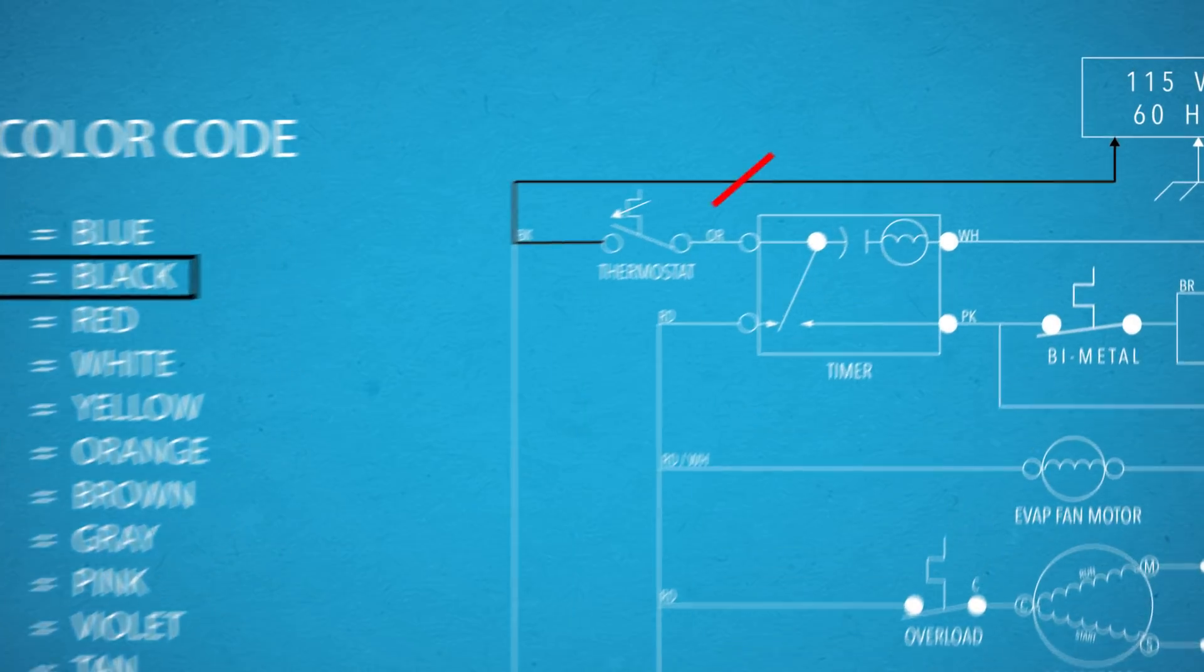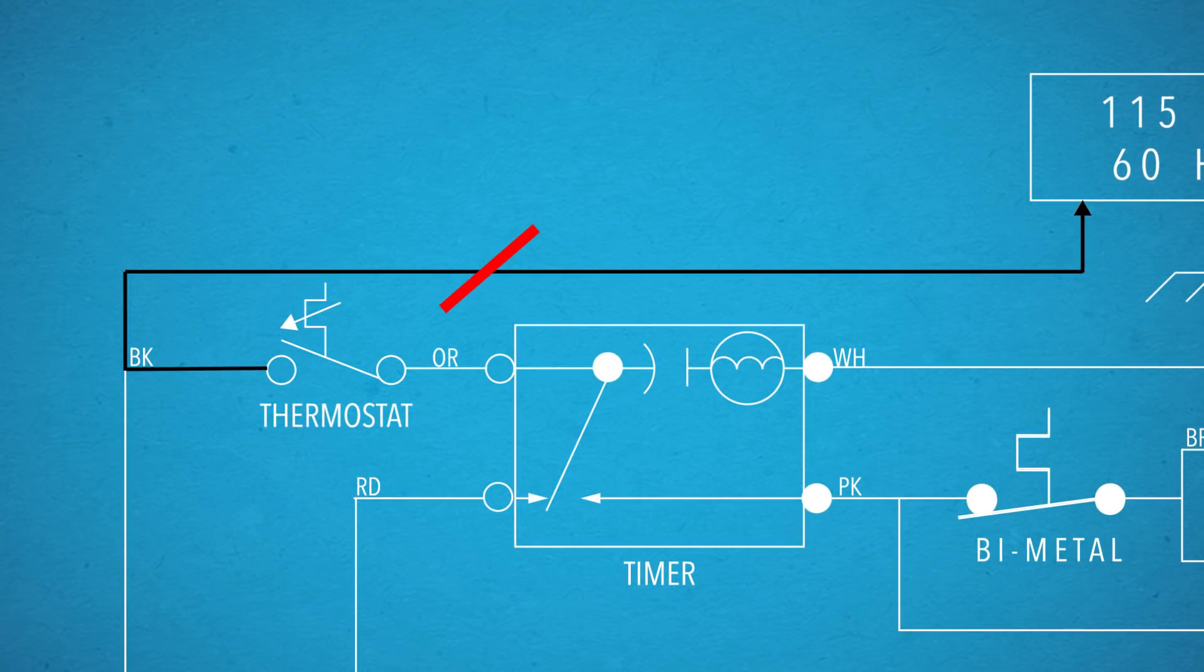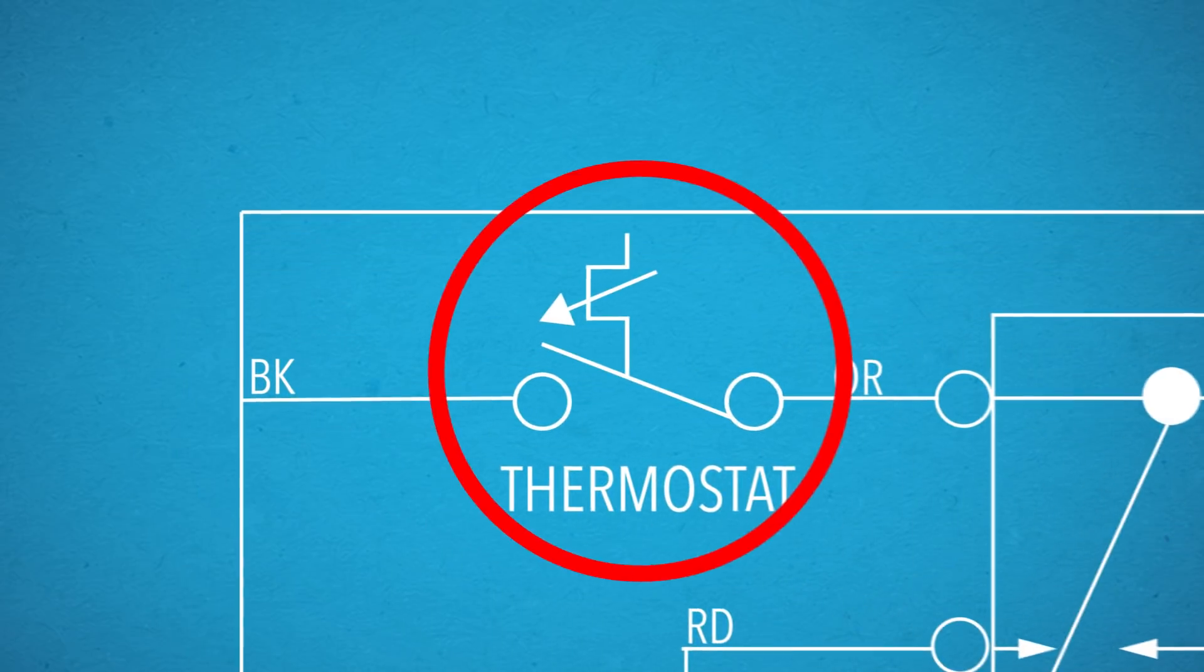For example, a broken black wire going to a thermostat can prevent the refrigerator from cooling. If the wiring is okay, you may need to replace the thermostat.